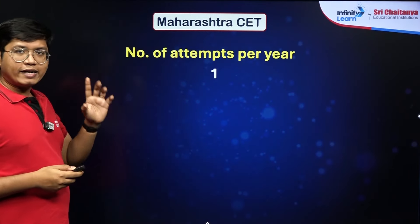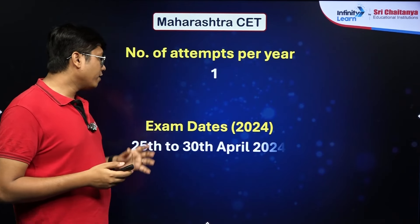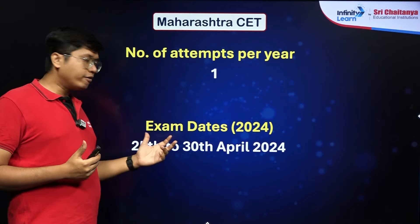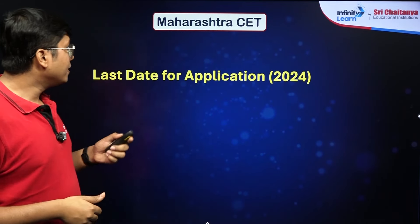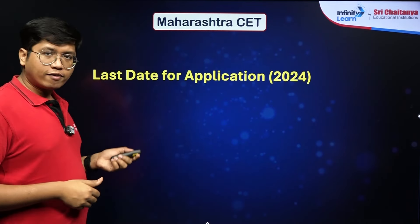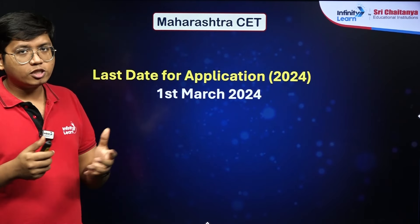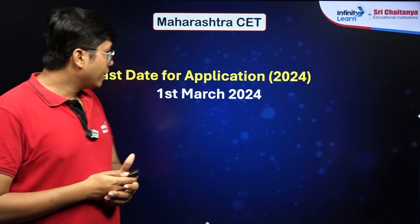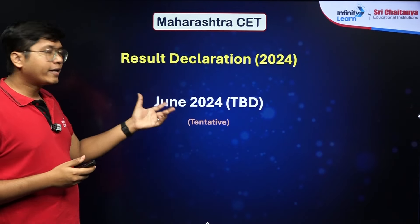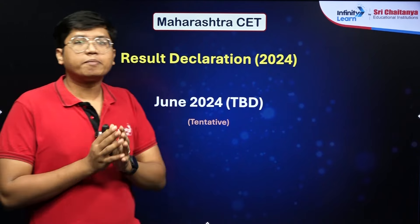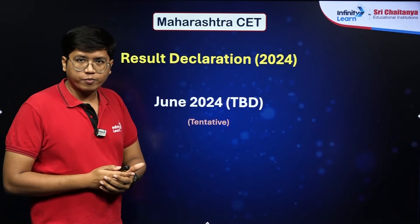You can only give one attempt per year for the paper. The exam date for 2024 is from the 25th to the 30th of April. The last date for the application form is the 1st of March 2024, so make sure you fill that up in time. The result declaration is tentatively in June 2024, though the exact date has not yet been announced.